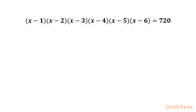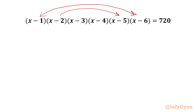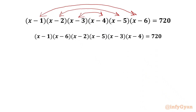Let's get started by writing the first and last brackets together: 1 plus 6 equals 7. The second and second-last brackets together: 2 plus 5 equals 7. The third and third-last brackets together: 3 plus 4 equals 7 again. So we will be writing the equation in this manner.